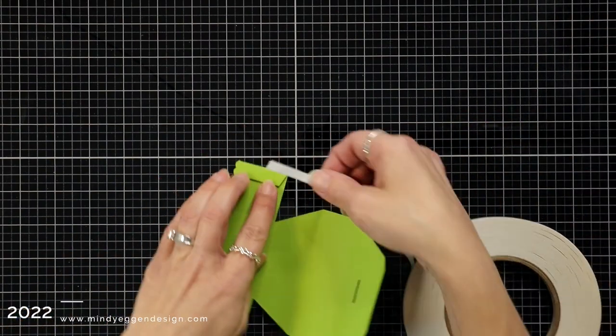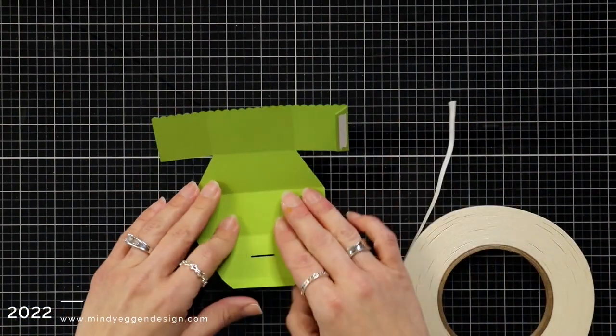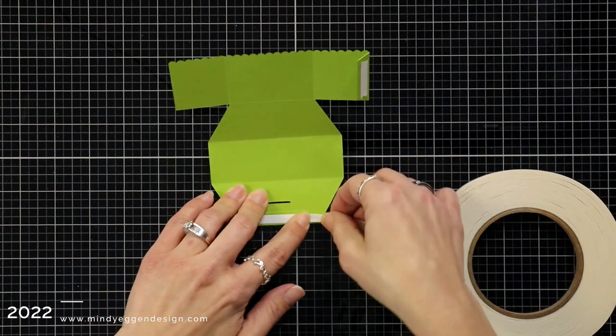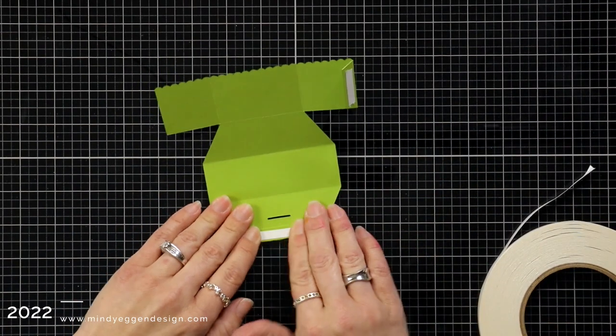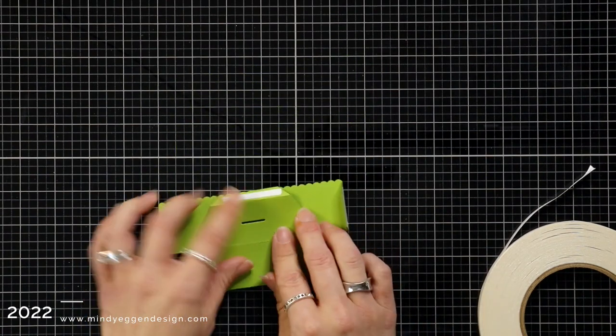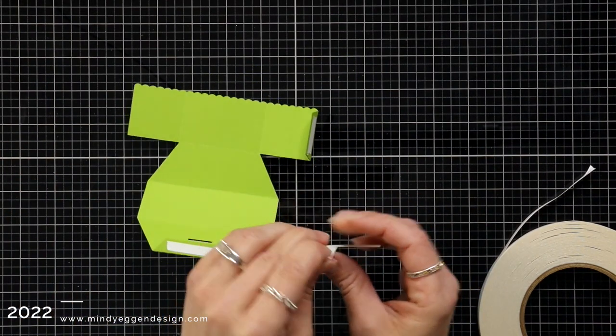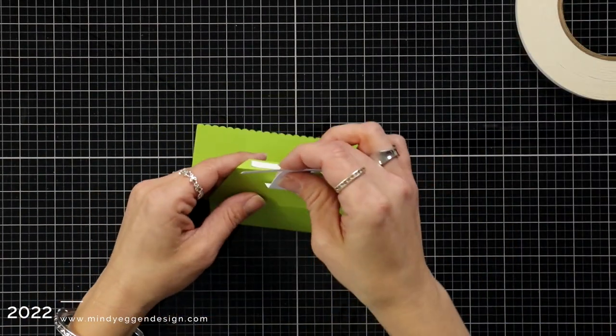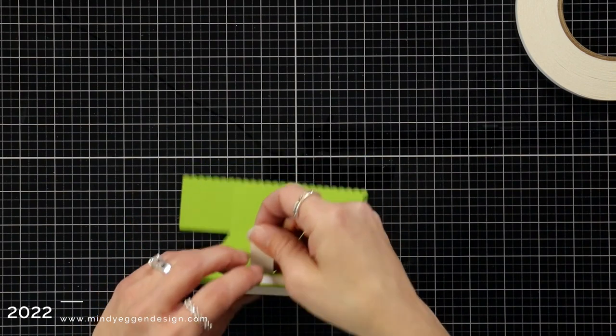I will show you in faster mode on the second half. I already went ahead and pre-folded this one. What I did want to mention is if you're having trouble with your score line, you can take that over to your score pal and reinforce those folds. Just use your bone folder and your score pal and go right over those score lines. That might help you a little bit with the cardstock.